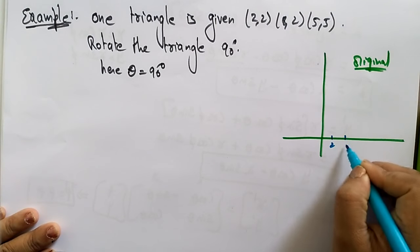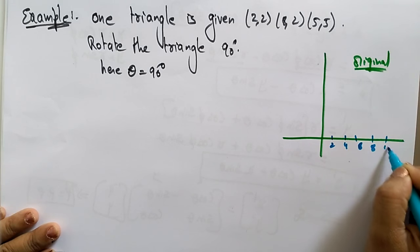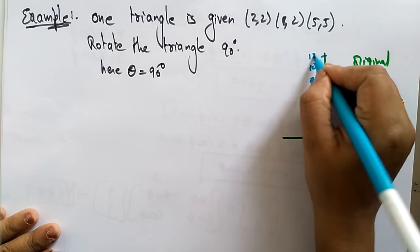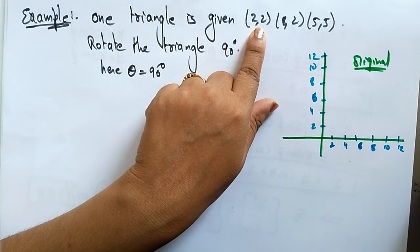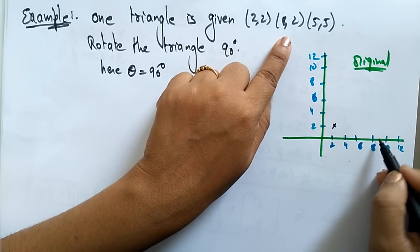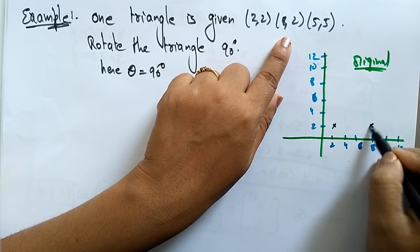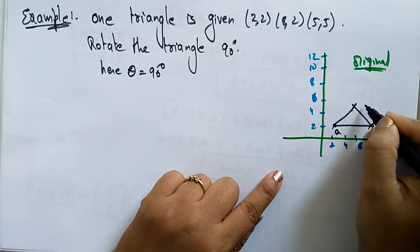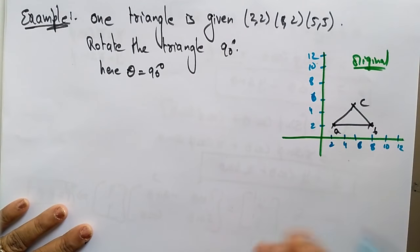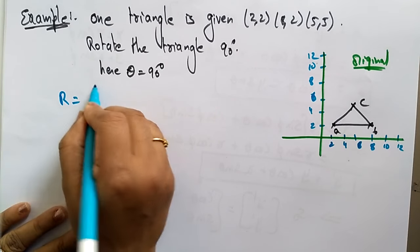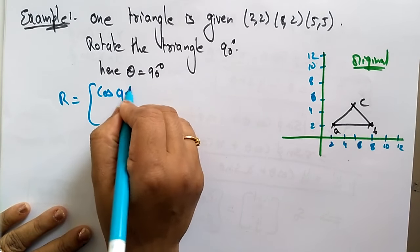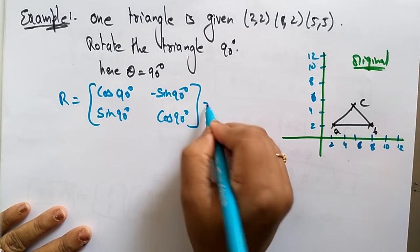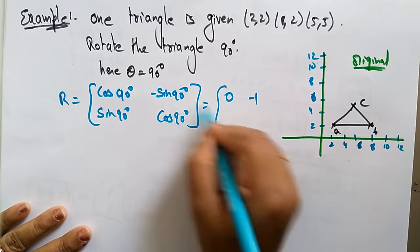Let's plot the original triangle on the coordinate system. A is at (2, 2), B is at (8, 2), and C is at (5, 5) — this gives us the original triangle ABC. Now the rotation matrix R for 90 degrees is: cos(90°) = 0, −sin(90°) = −1, sin(90°) = 1, cos(90°) = 0. So R = [0, −1; 1, 0].